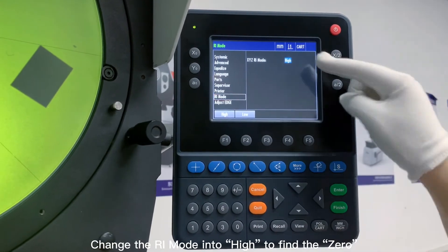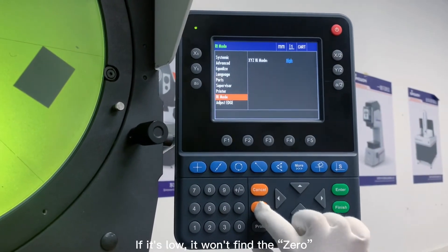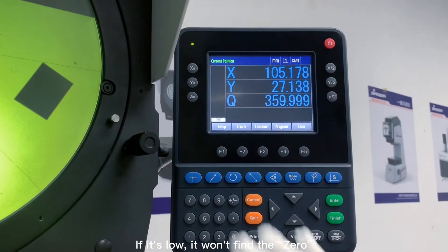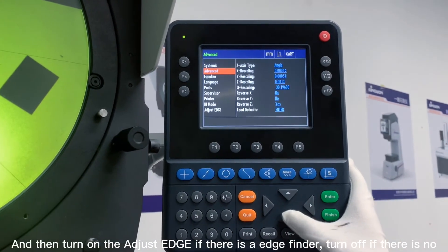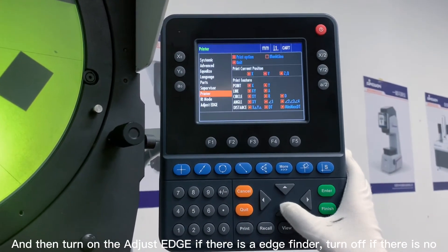Change the RI mode into high to find the zero. If it's low, it won't find the zero. Then turn on the adjust edge if there is an edge finder, turn off if there is no.